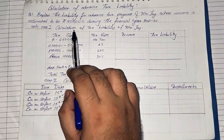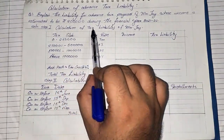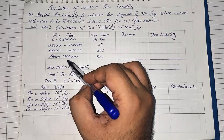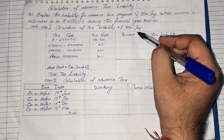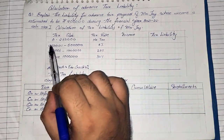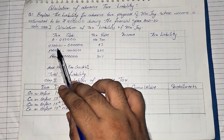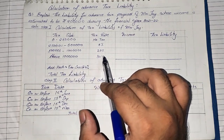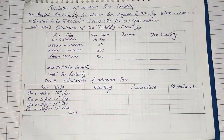We will solve the sum in two steps. Step one: calculate the tax liability of Mr. J. Give the heading 'Tax Liability of Mr. J' and create a table with tax slabs, tax rates, income, and tax liability. Assuming he is less than 60 years old, the slabs are: 0 to 2.5 lakhs — no tax; 2.5 to 5 lakhs — 5%; 5 to 10 lakhs — 20%; and 10 lakhs and above — 30%.